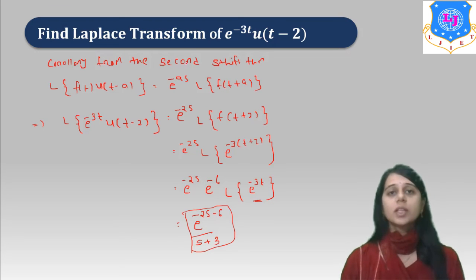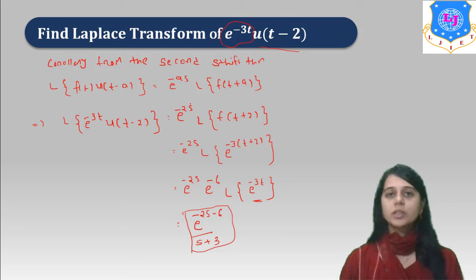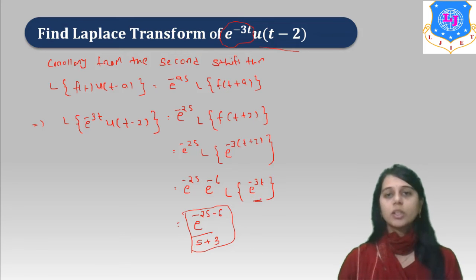Again, from the Second Shift Theorem, we have derived the corollary: Laplace of f(t) times u(t minus a) equals e raised to minus as times Laplace of f(t plus a). Comparing the example with this corollary, f(t) is e raised to minus 3t and a is 2. So we take e raised to minus 2s times Laplace of f(t plus 2). Since the function is e raised to minus 3t, replacing t with t plus 2 gives e raised to minus 2s times e raised to minus 6, over s plus 3.